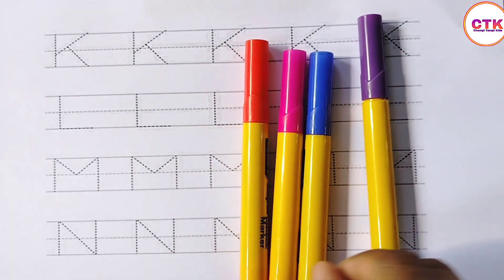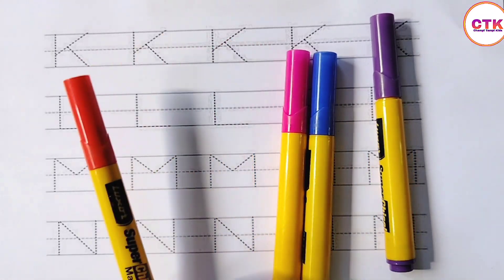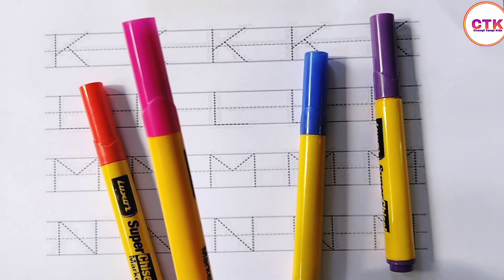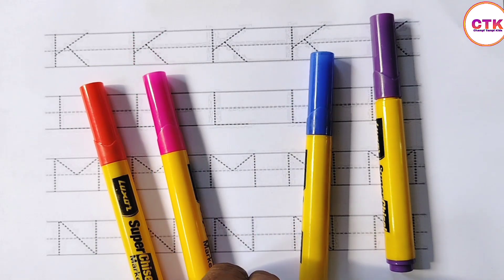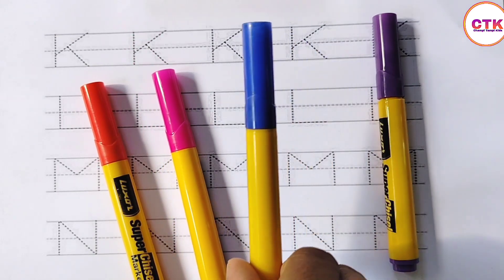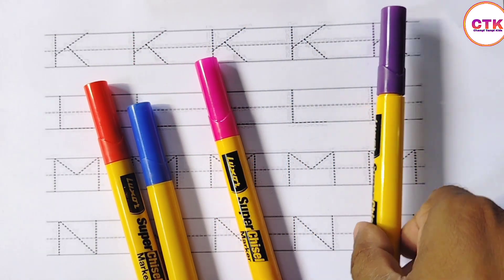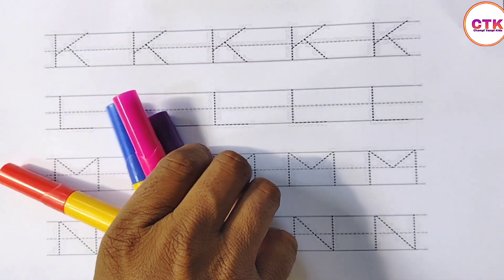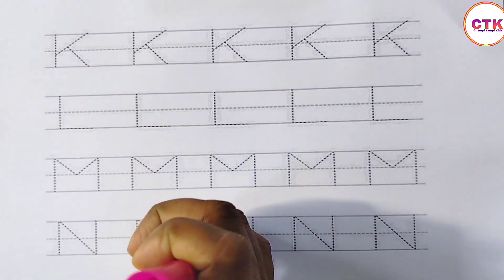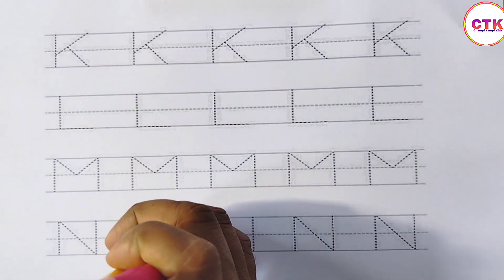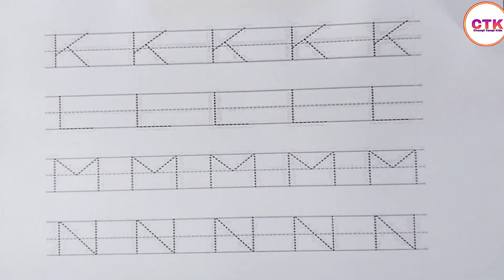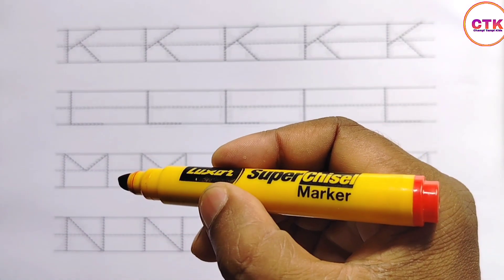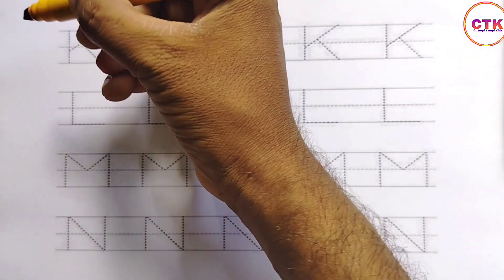Colors: red color, pink color, blue color, and violet color. Let's learn the English alphabet. Red color.